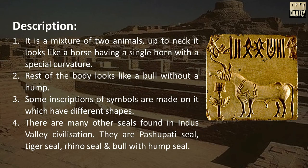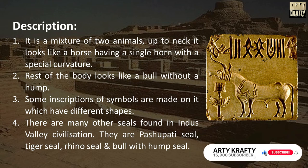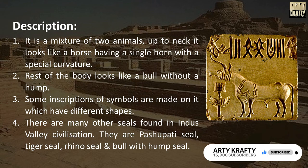It is a mixture of two animals. Up to the neck it looks like a horse having a single horn with a special curvature; the rest of the body looks like a bull without a hump. Some inscriptions of symbols are made on it which have different shapes. Many other seals are found in Indus Valley Civilization: the Pashupati seal, tiger seal, rhino seal, and bull with hump seal.